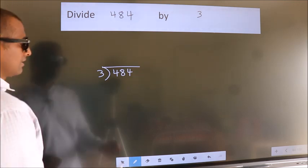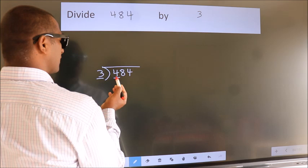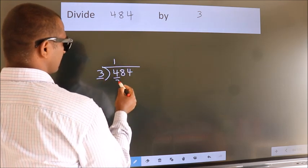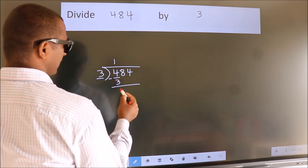Next. Here we have 4, here 3. A number close to 4 in 3 table is 3 1s 3. Now, we should subtract. We get 1.